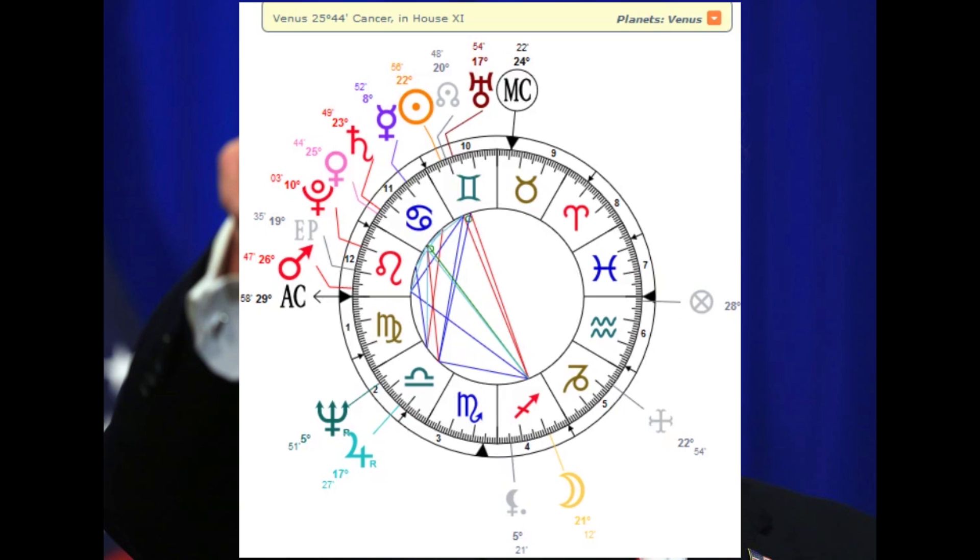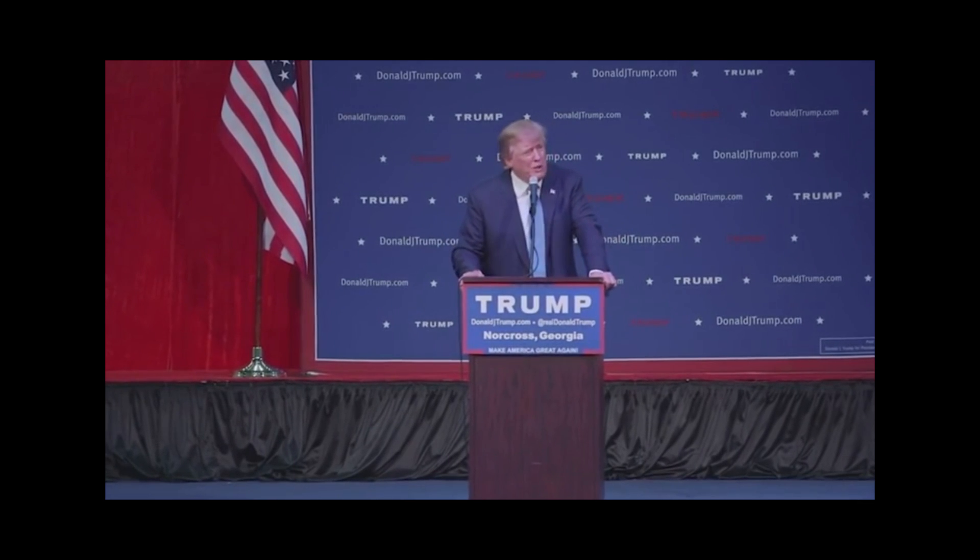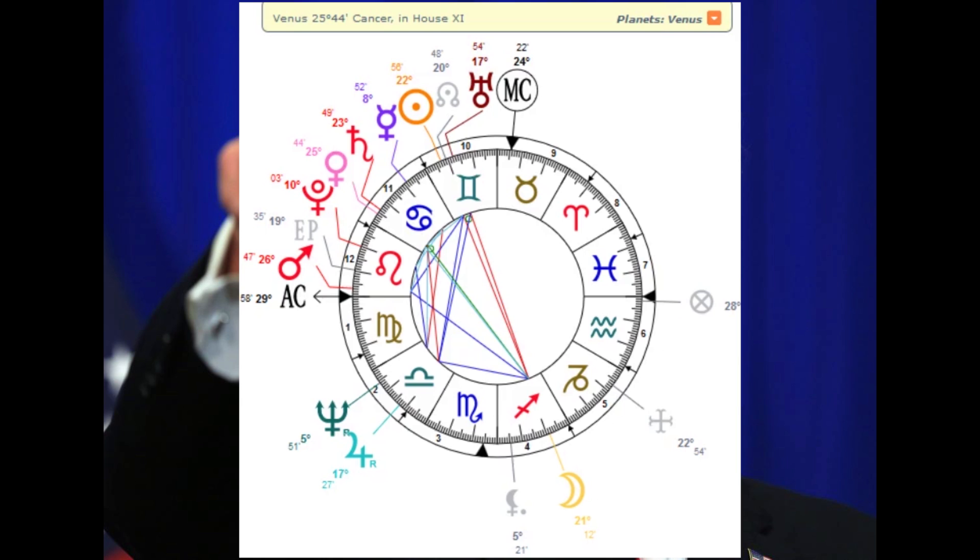And Congress knows this. There's a huge opposition, even within the government, for someone like this man to be elected. Because he says whatever he wants. He literally says whatever he wants. But let's get a little bit more technical into this chart. I've been rambling.